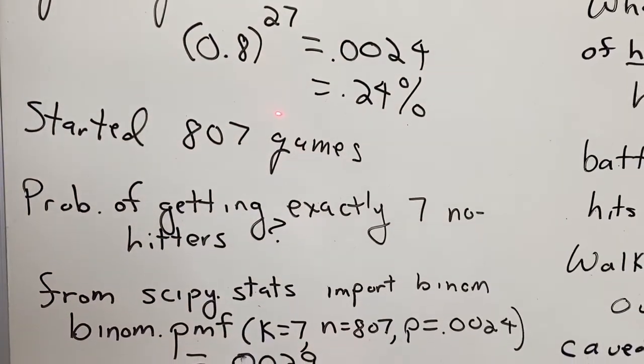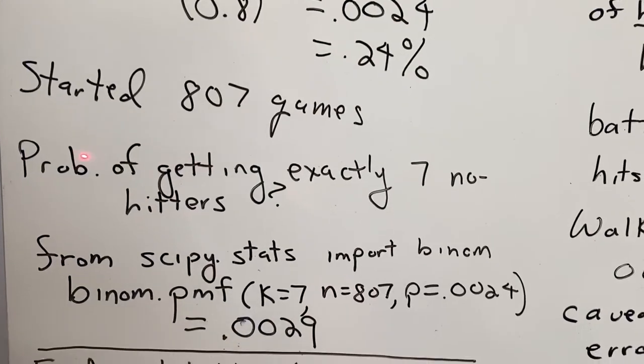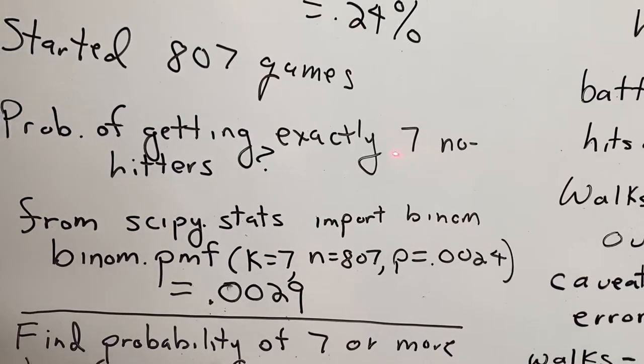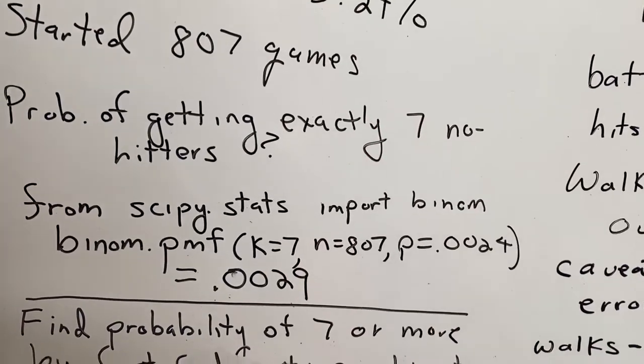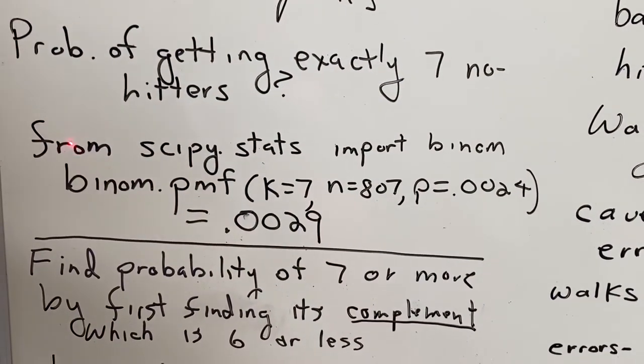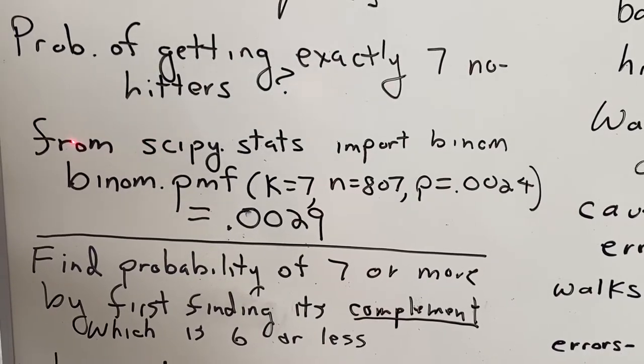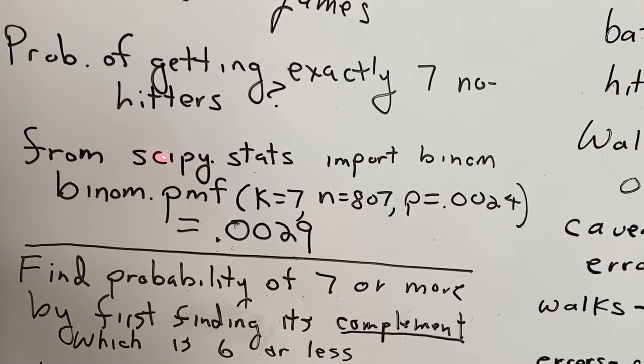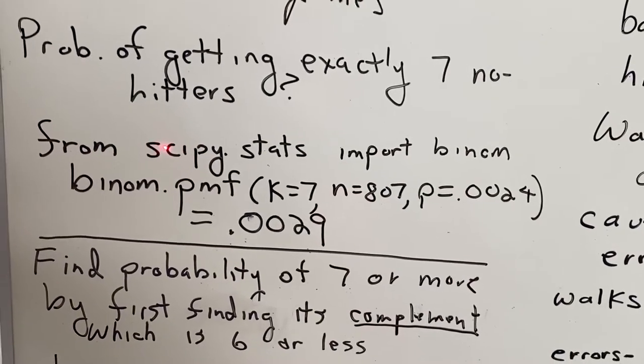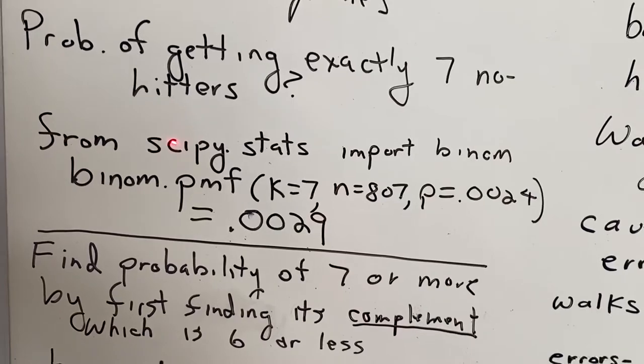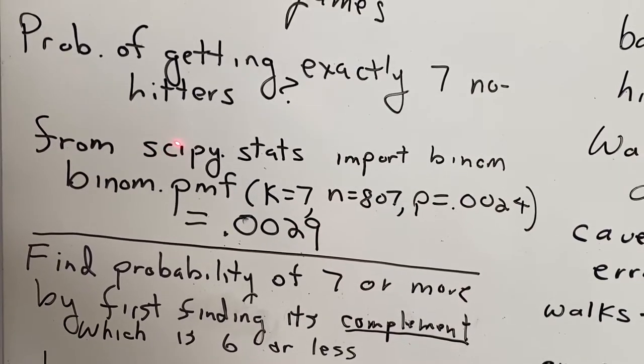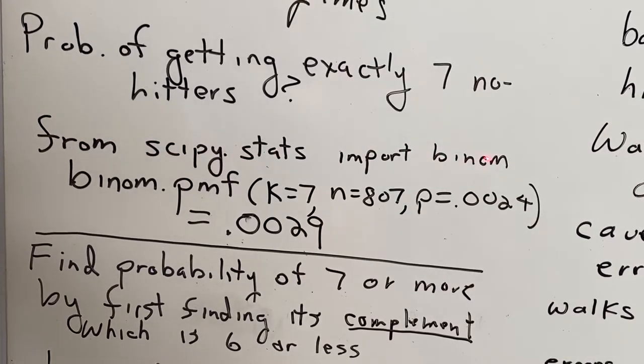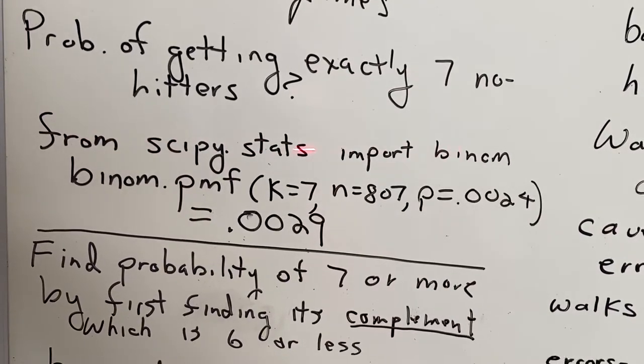Okay, so he got 7 no-hitters. So let's first ask the question, what's the probability of getting exactly 7 no-hitters? Well, many of you probably have learned Python. That's kind of become the big computer language in the last 5 or 10 years or so, but just a couple easy lines that you can even try this yourself if you happen to have Python available. So it's this line, which I'm not going to read it, but you can see it here.